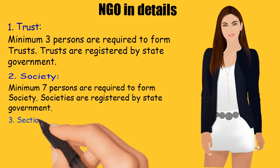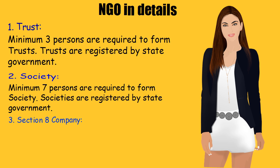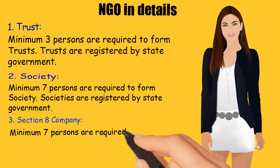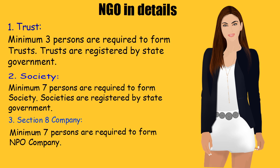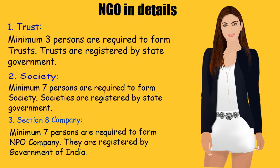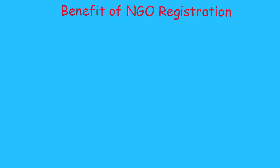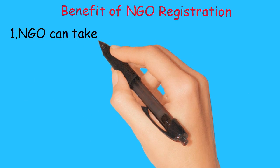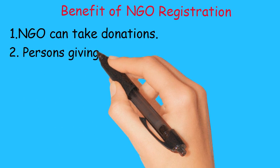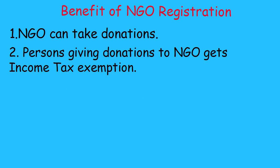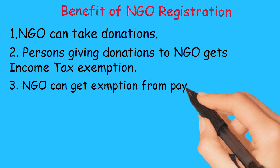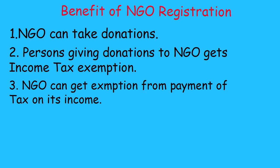3. Section 8 Company: A minimum of 7 persons are required to form an NPO Company. Section 8 Companies are registered by the Government of India. Benefits of NGO Registration: 1. An NGO can take donations. 2. Persons giving donations to an NGO get income tax exemption. 3. An NGO can get exemption from payment of tax on its income.